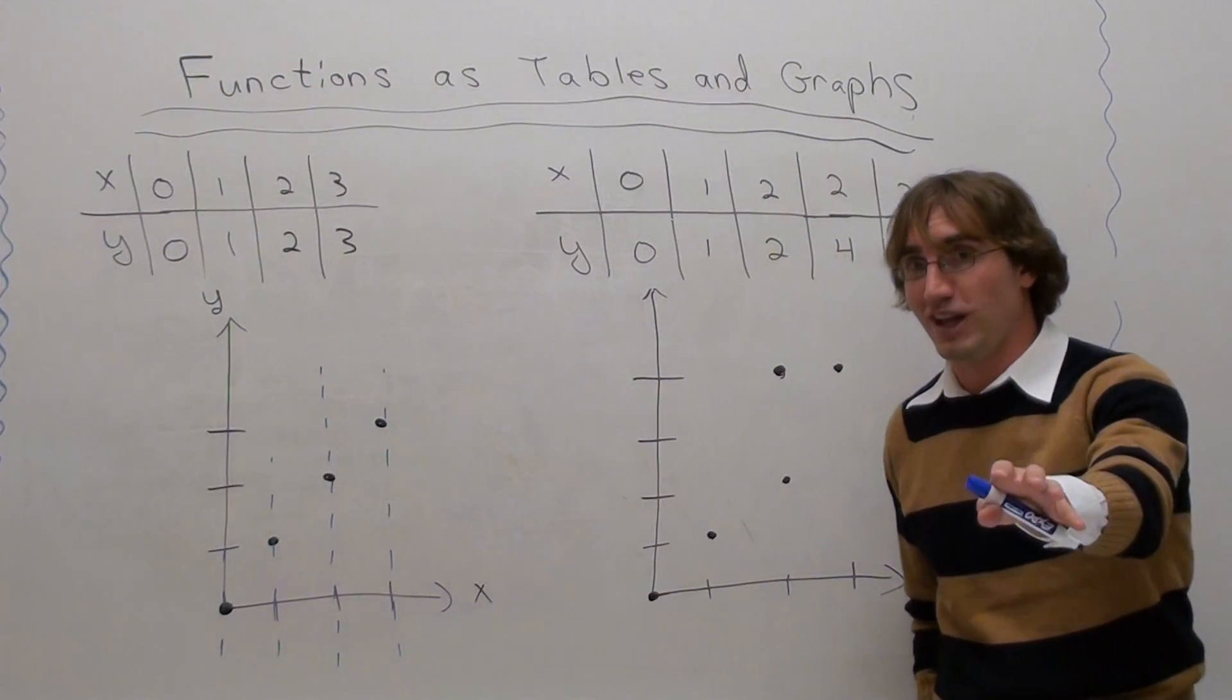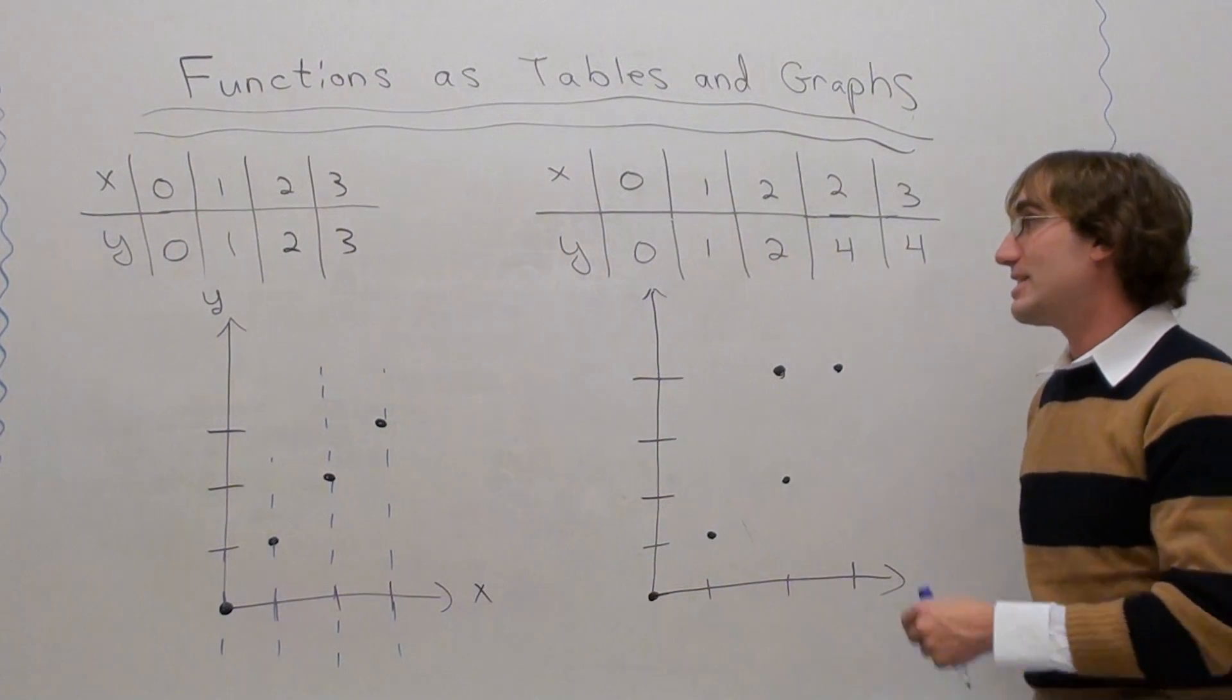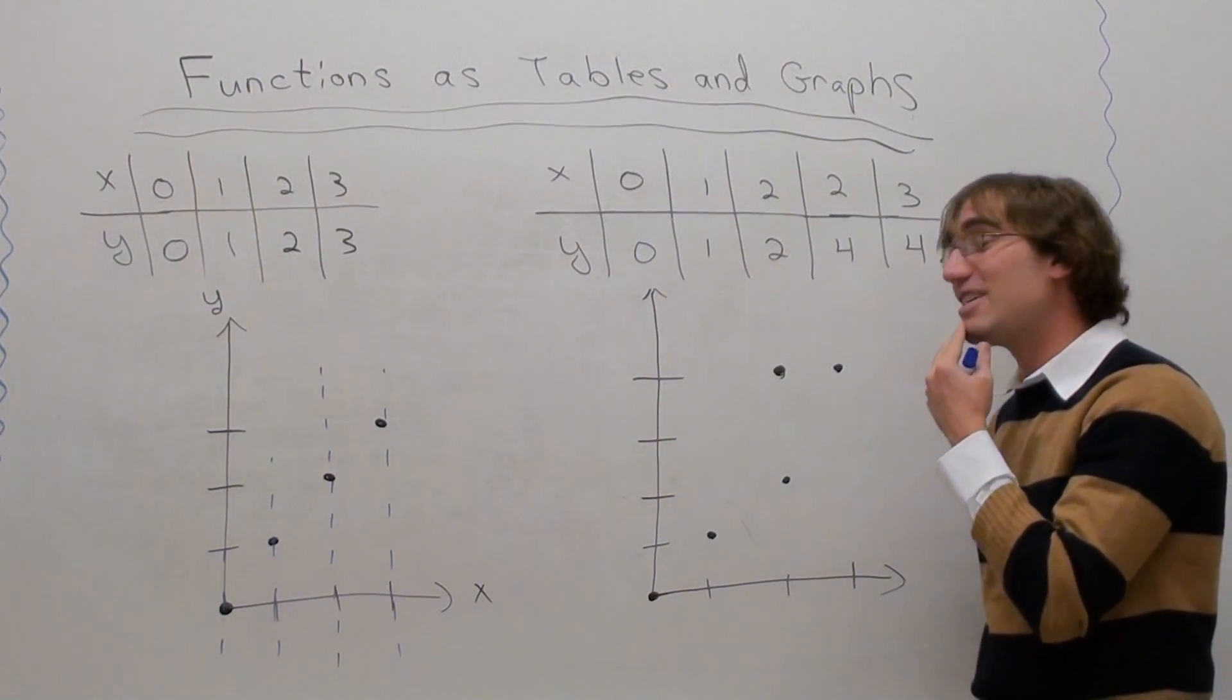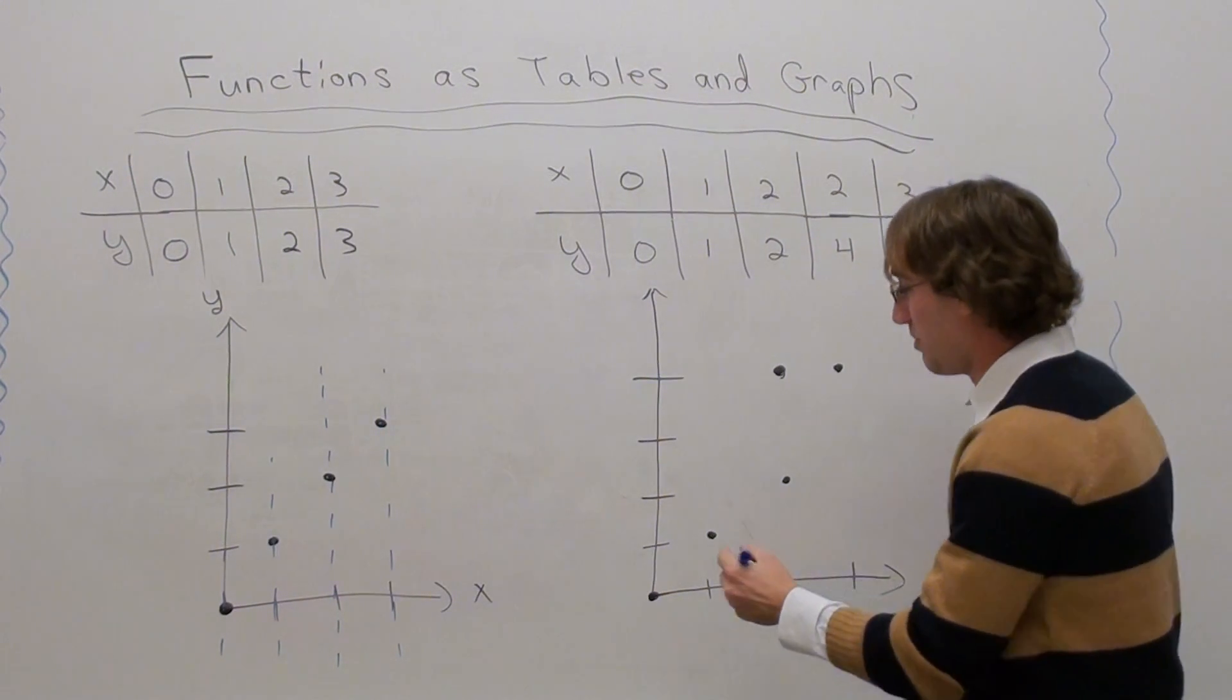But if I look at the vertical line test, or the VLT, I can see that this relationship right here, that's not functional at all. I mean, it's a relationship, but it certainly isn't functional, and I'll tell you what I mean.